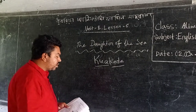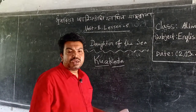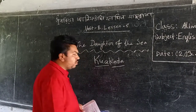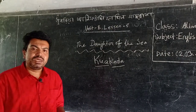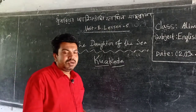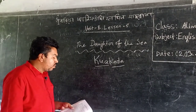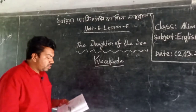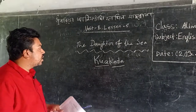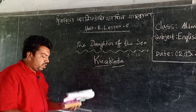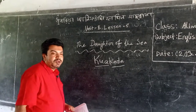Kuakata is located in Patuakhali district, in the southern part of Bangladesh, in Barisal division. Kuakata is locally known as 'Shagor Konna,' which is another name for Kuakata. 'Shagor Konna' means the Daughter of the Sea.